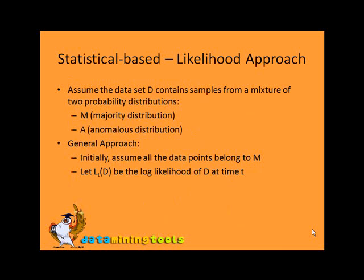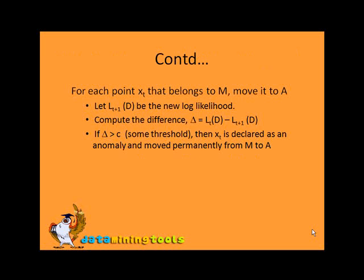Statistical-based likelihood approach: Assume the dataset D contains samples from a mixture of two probability distributions, where M is the majority distribution and A is the anomalies distribution. The general approach is to initially assume all data points belong to M. Then let L(D) at time T be the log likelihood of D at time T.